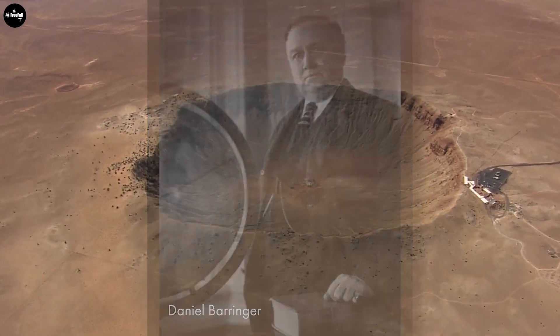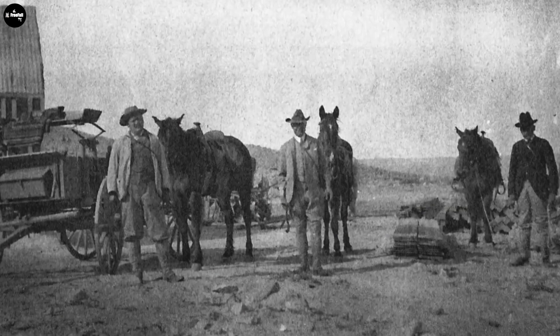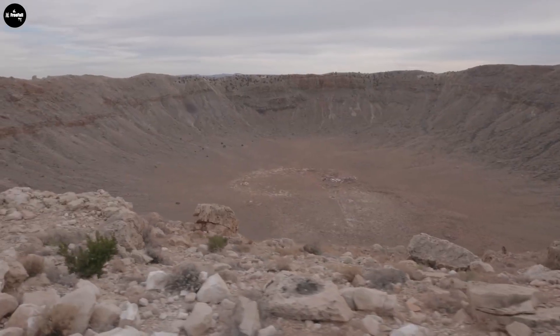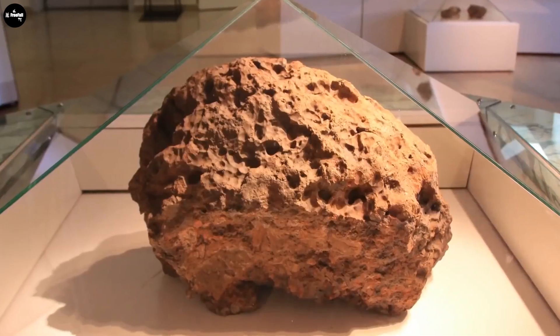It is known that meteorites smaller than 10 meters in size when falling into the Earth do not cause serious problems. But its large size can have serious consequences, affecting an area and even destroying the life of a large area.